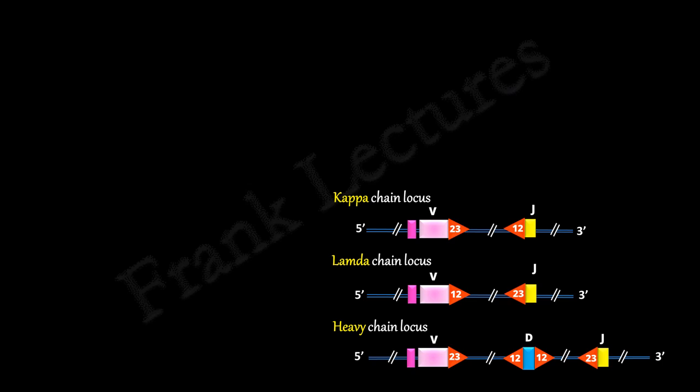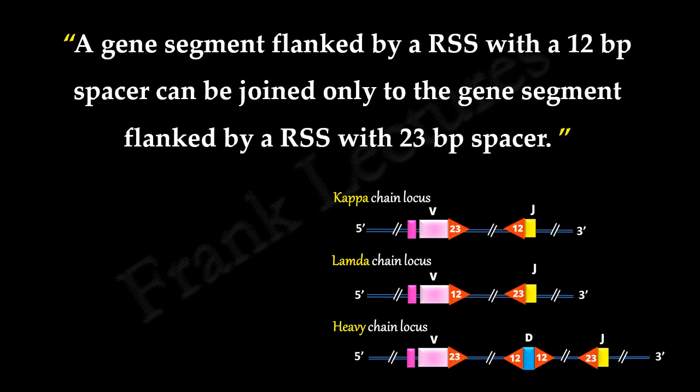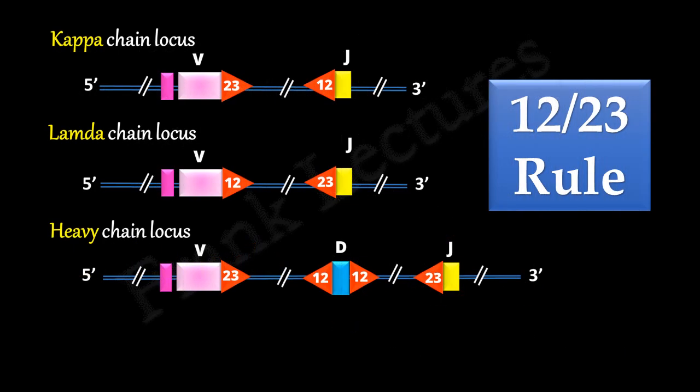A rule is followed during VDJ recombination: a gene segment flanked by an RSS with a 12 base pair spacer can be joined only to a gene segment flanked by an RSS with a 23 base pair spacer. This rule is known as the 12/23 rule. According to this joining rule, recombination can only occur between an RSS with a 12 base pair spacer and an RSS with a 23 base pair spacer. This ensures that at the light chain locus, a V gene segment joins only to a J gene segment, not to another V gene segment. Similarly, in the heavy chain locus, a J gene segment cannot join directly to a V gene segment, because both V and J gene segments have 23 base pair spacers. Thus, this rule ensures that the V, D, and J gene segments join in the proper order.